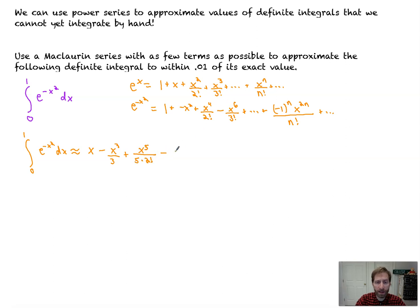Plus x to the fifth over 5 times 2 factorial. Minus, and this will be x to the seventh over 7 times 3 factorial. Literally just integrating it like normal. Those factorials are constants. You don't need to do anything to the nth term at all. And now we're going to just evaluate this from 0 to 1.